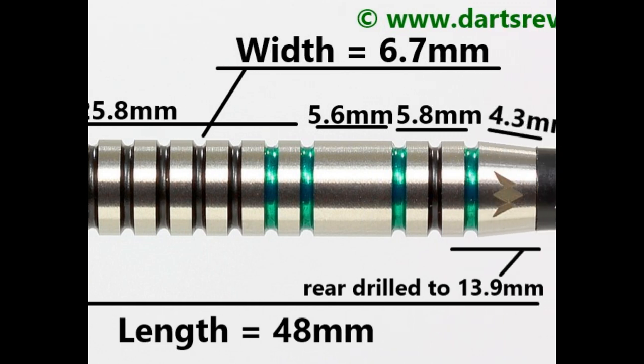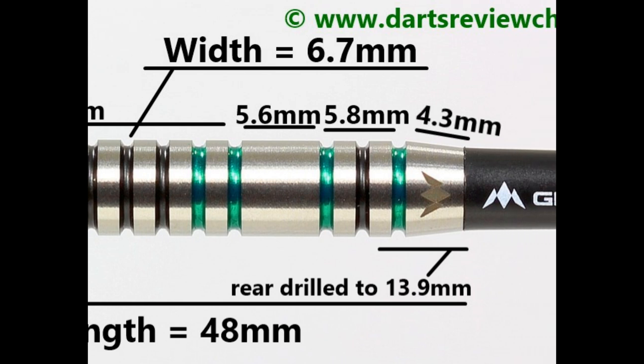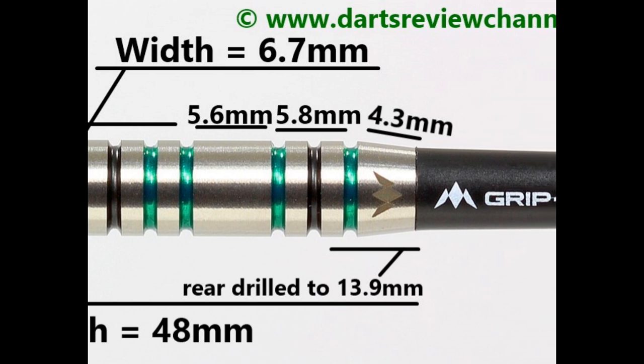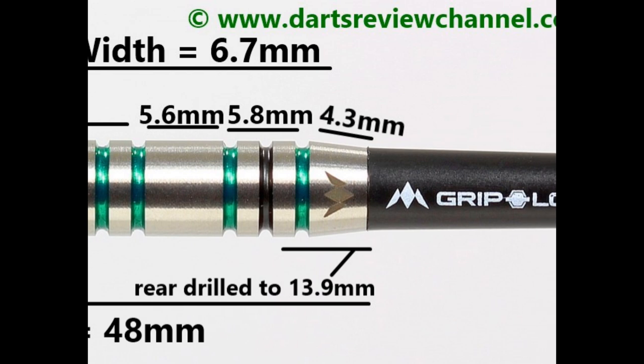Then you've got a smooth band of 5.6 millimeters and some more rings and grooves, 5.8 millimeters. And then a smooth tapered section on the end of 4.3 millimeters. Length is 48 millimeters, width is 6.7 millimeters.